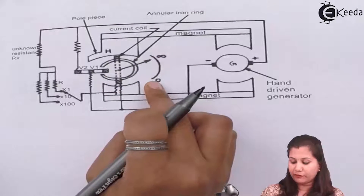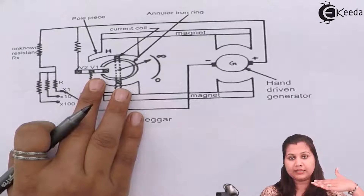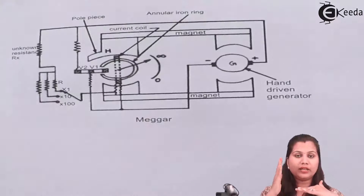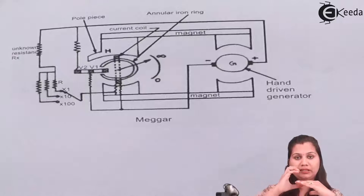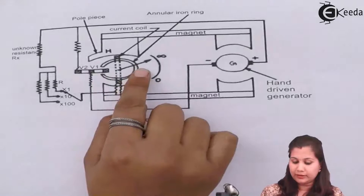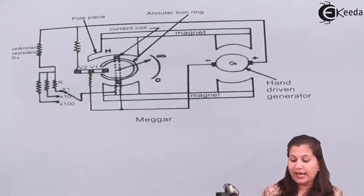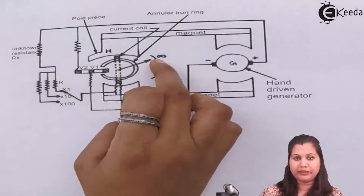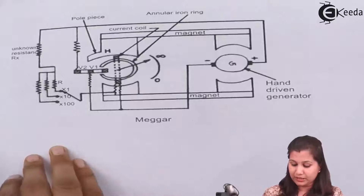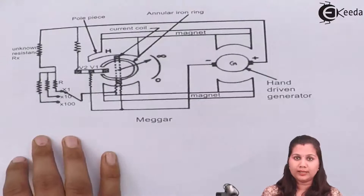The pointer moves over the scale from zero to infinity. When V1 is in the strong magnetic field — in the horizontal position between the C-shaped annular ring — the magnetic field is very strong and the pointer will be at the zero position, as maximum torque is exerted. When V1 is in a weak magnetic field the pointer will be at the infinite position, meaning a very high resistance is present in the circuit which is not allowing current to flow.